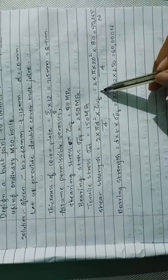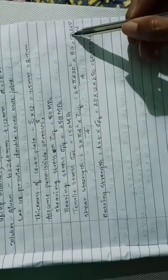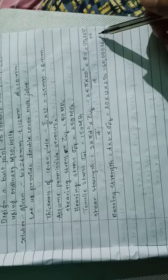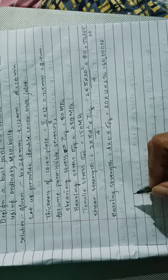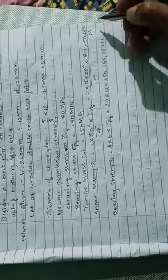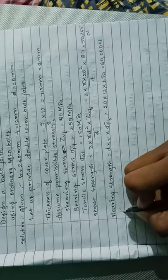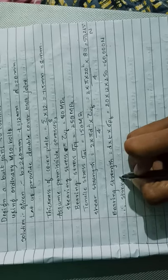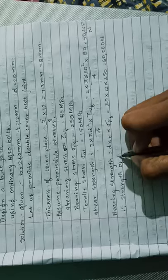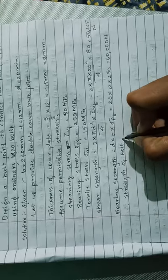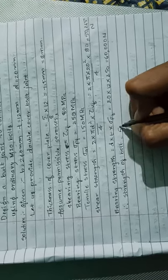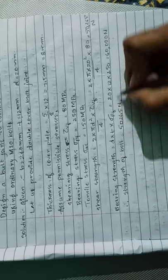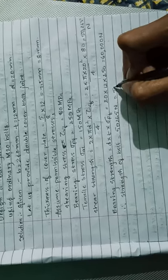Now we have to compare both values and consider which one is the minimum. Here, shear strength value is the minimum. Hence we have to assume strength of the bolt as 50,265 N, or 50.265 kN. Therefore, strength of the bolt is 50.265 kN.